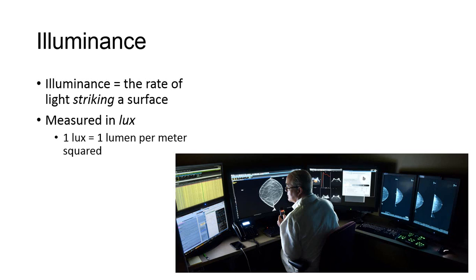Illuminance refers to the rate of light striking a surface — in other words, how well objects in our field of view are illuminated. One lux is equal to one lumen per meter squared. In radiology, this is typically used to measure the amount of ambient lighting in the radiologist's reading room.